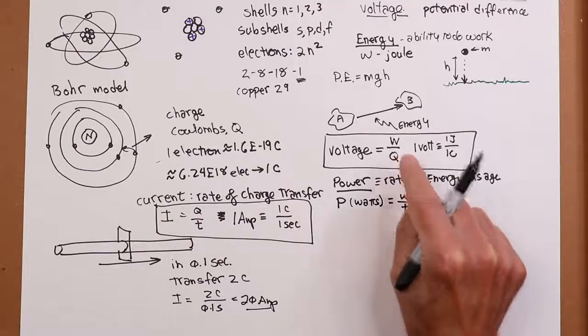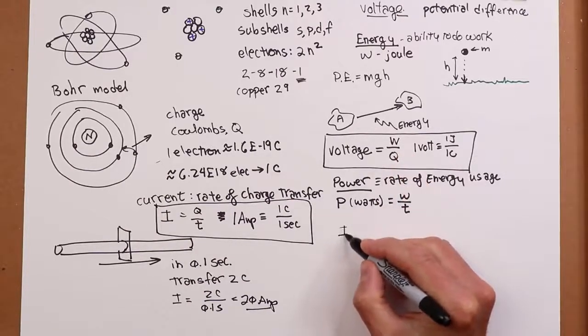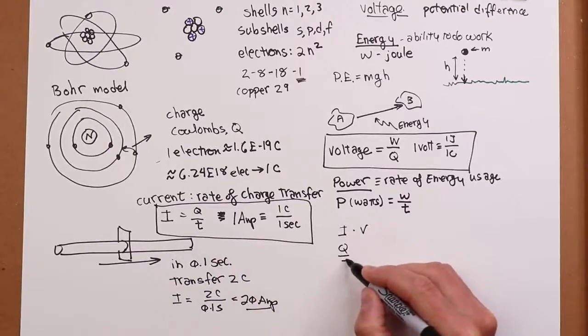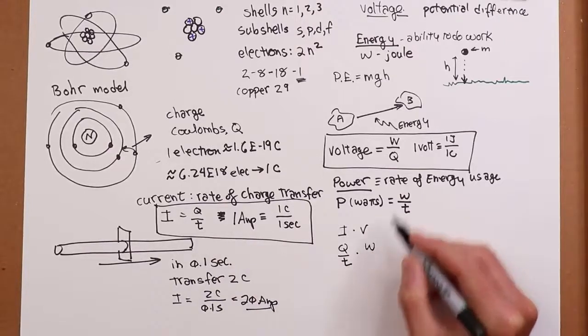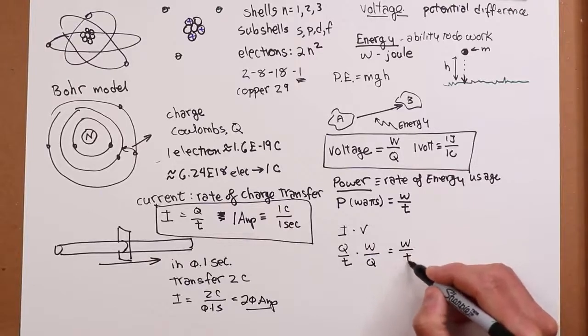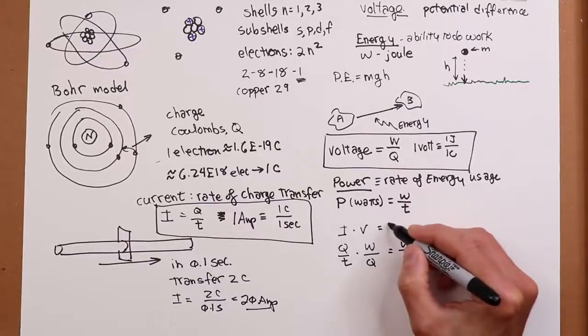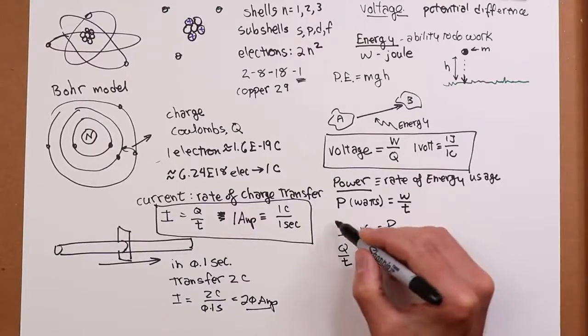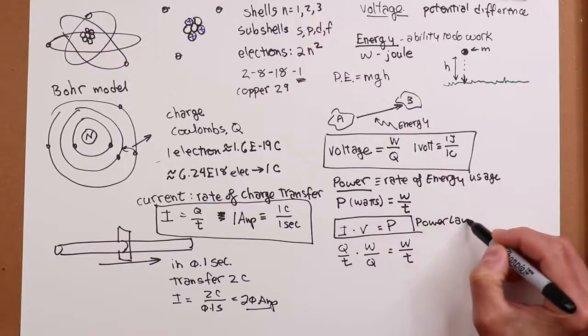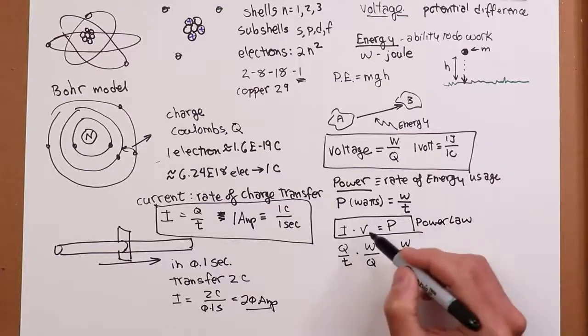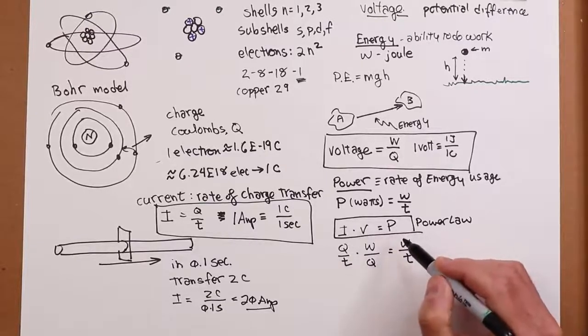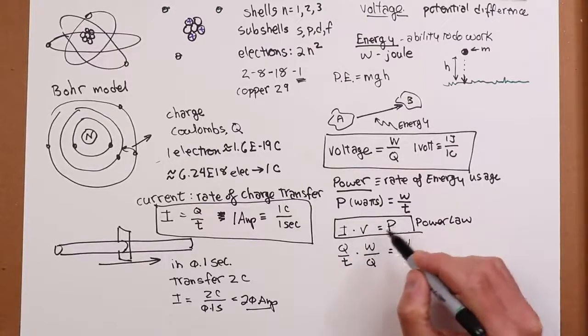Well, here's an interesting thing. If you multiply current by voltage, current is q over t. Voltage is w over q. And what you see is the q's cancel and you wind up with w over t. In other words, current times voltage is power. This is called power law. It's very important. You can have high voltage, current's really small, not a lot of power. You can have really high current, voltage small, not a lot of power. You get a modest current and a modest voltage, that can turn into a pretty good size power.